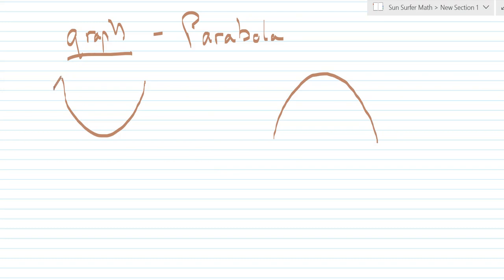It goes up infinitely far or down infinitely far if the domain is not being restricted. The turning point is called the vertex. In an upturning parabola, the vertex is at the lowest point, and in a downturning parabola, the vertex is at the highest point.